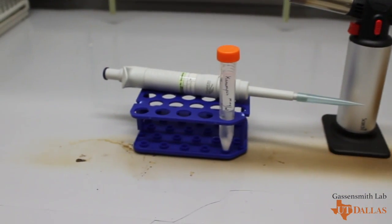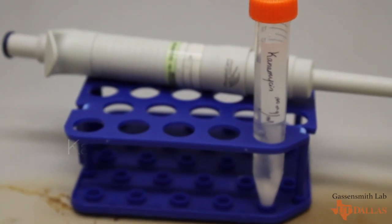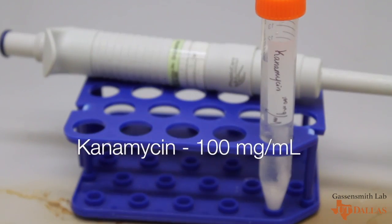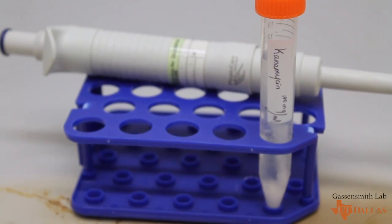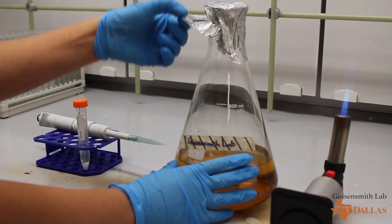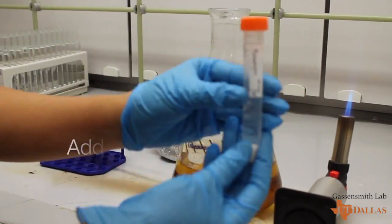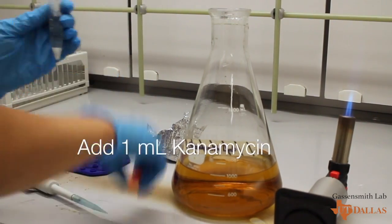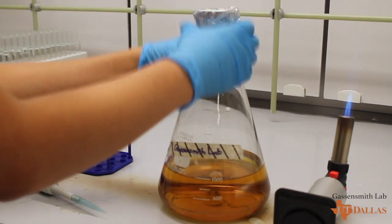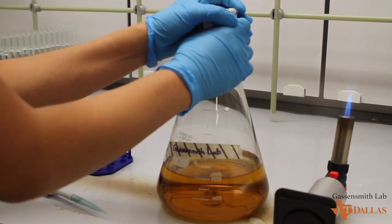For this next step, we need cooled media, a flame source, and 100 mg per milliliter kanamycin. Make sure your work area is sterile and dry. We need to add one milliliter of kanamycin to the media. Kanamycin is a selective agent that's used to isolate bacteria. In this case, E. coli.